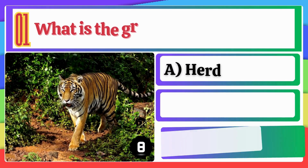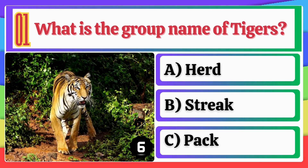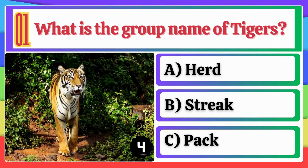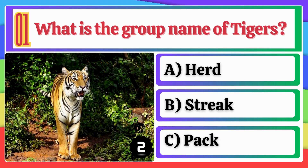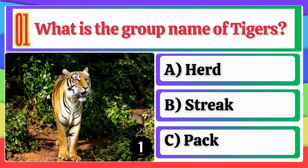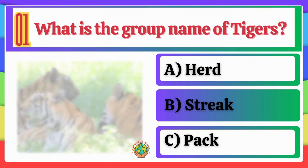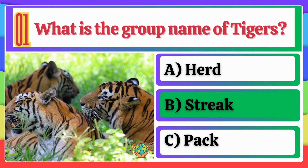What is the group name of Tigers? A. Heard. B. Streak. C. Pack. Option B, Streak, is the correct answer.